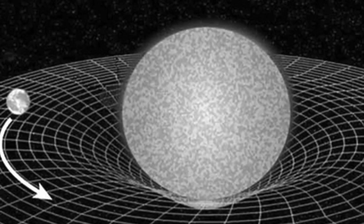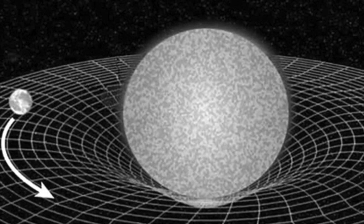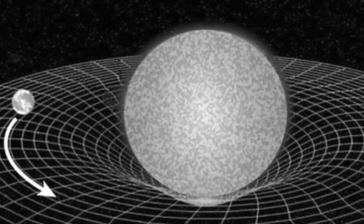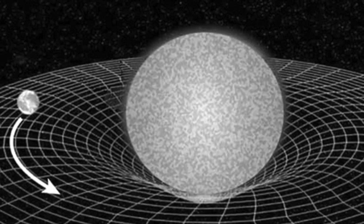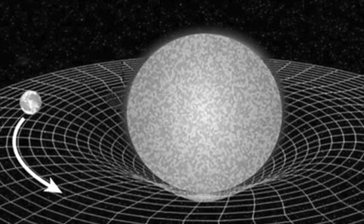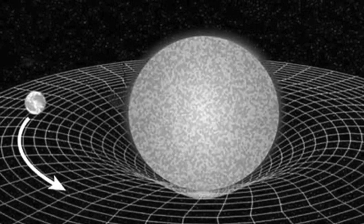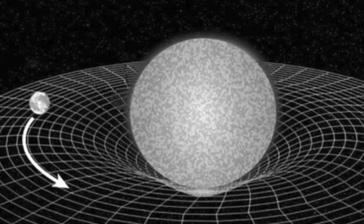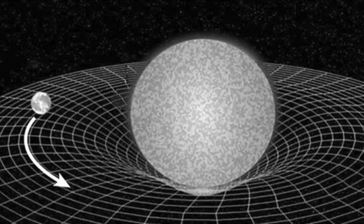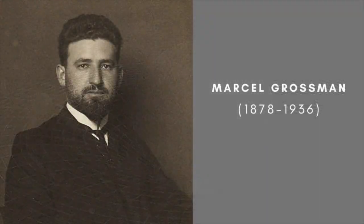How to stitch together countless tiny inertial patches to make a large smoothly undulating quilt of curved spacetime. As Einstein began thinking about this, he remembered Gauss's theory of surfaces and realized that the foundations of geometry had physical significance. To pursue the problem further, he contacted his old friend and talented mathematician Marcel Grossmann.